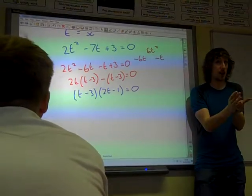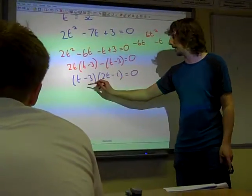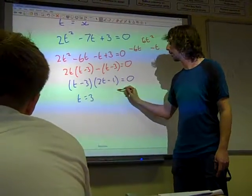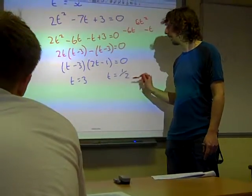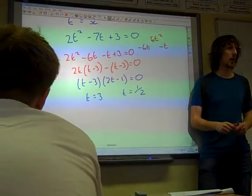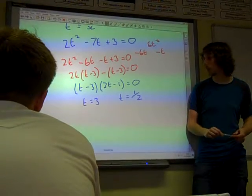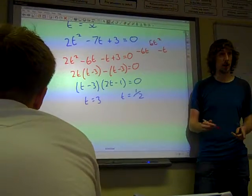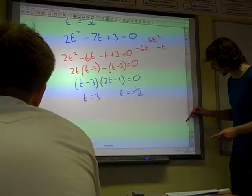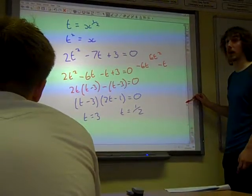Now, we're certainly not done yet with this. We've concluded that t is 3, or t is a half. But the question isn't about t, we just introduced that as our own variable to make it easier. The question is all about x.